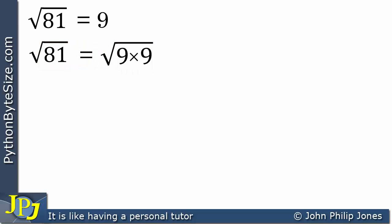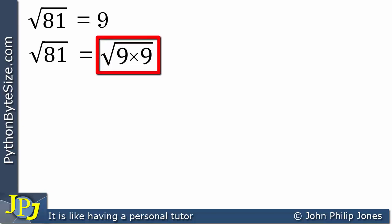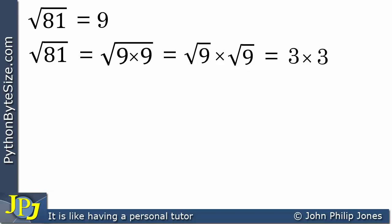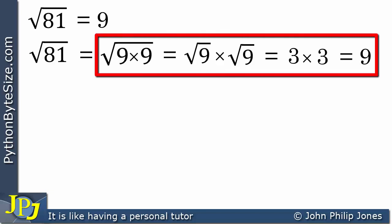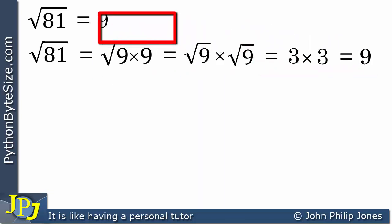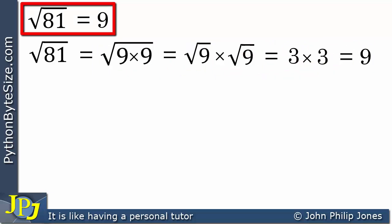We've looked at this in a previous video, the ability to split up as we can see here. What we can now do is say this is the same as the square root of 9 times the square root of 9. And obviously the square root of 9 is 3, so this is equal to 3 times 3, which is clearly going to equal 9 — the square root of 81 is 9.